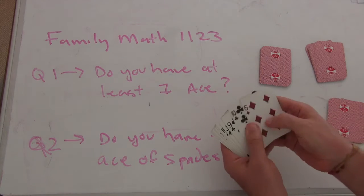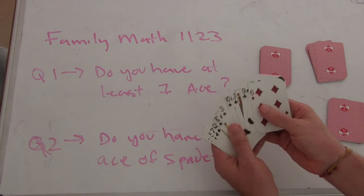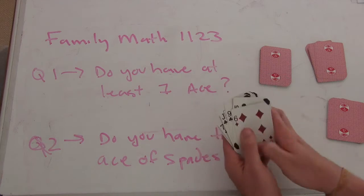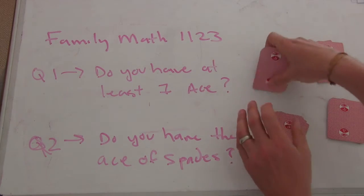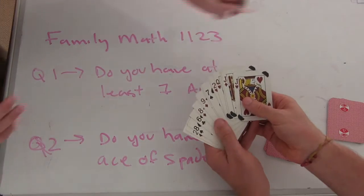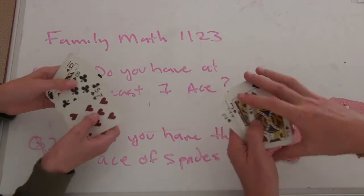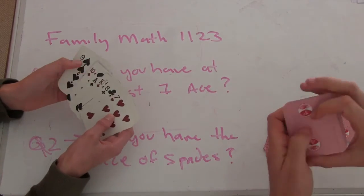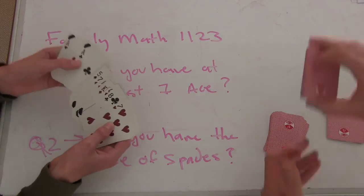What about this person? Do you have at least one ace? No. Do you have at least one ace? No. Okay, so that person hopefully has three. One, two, three.